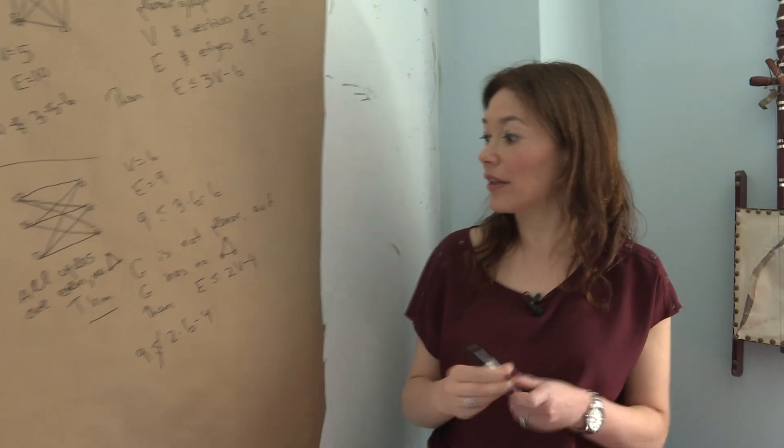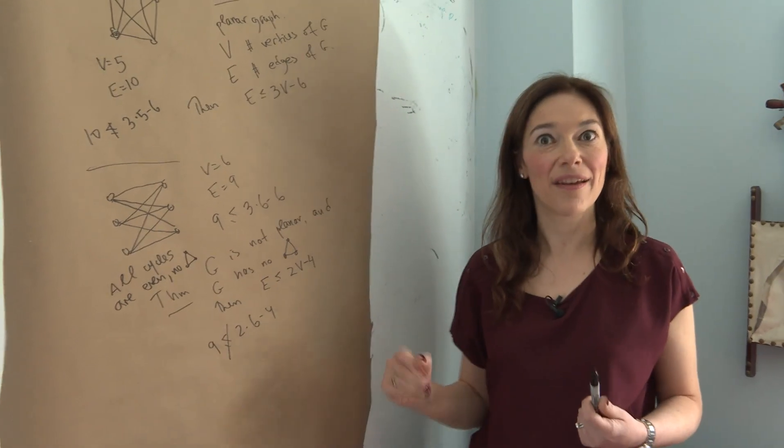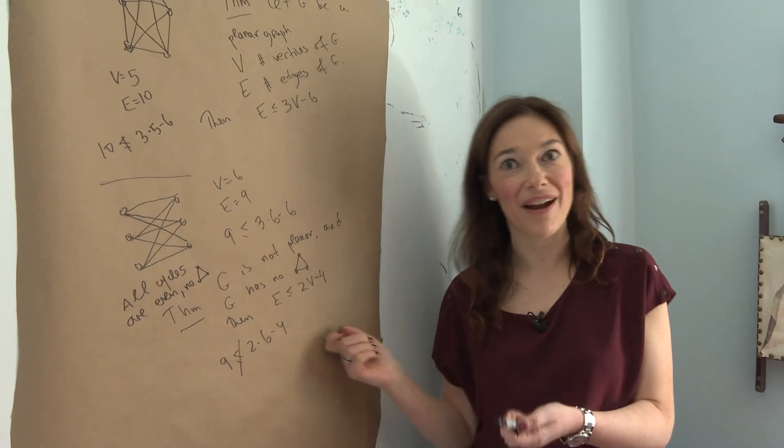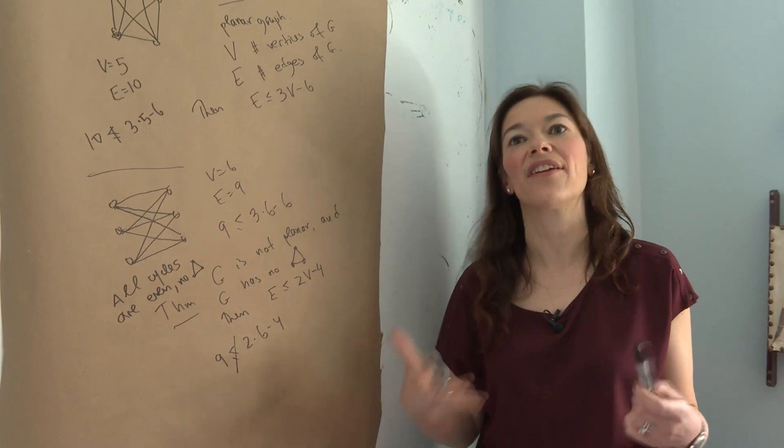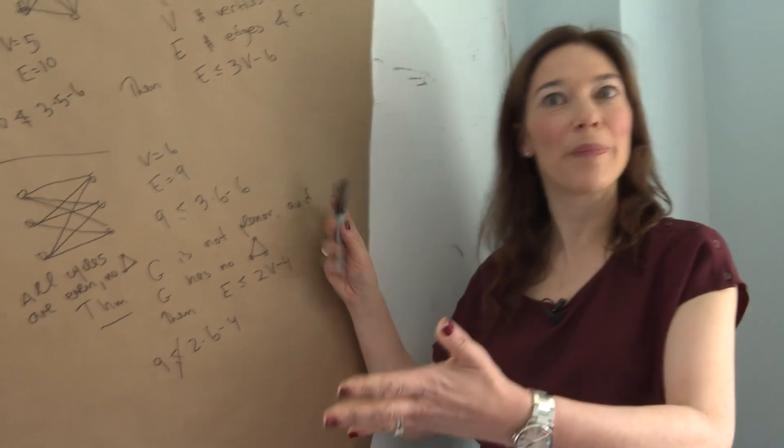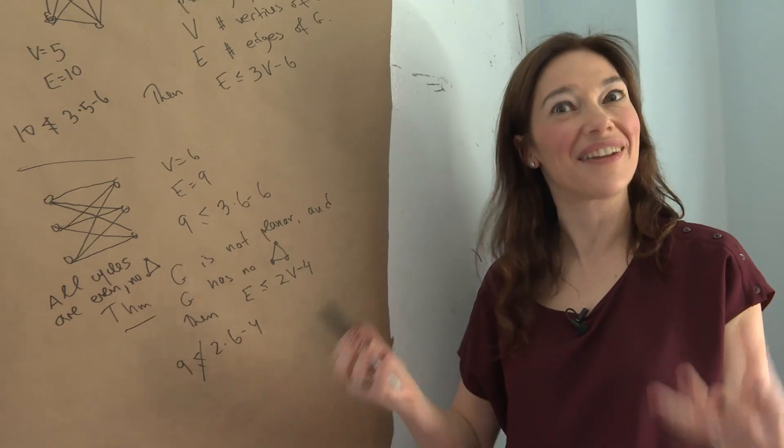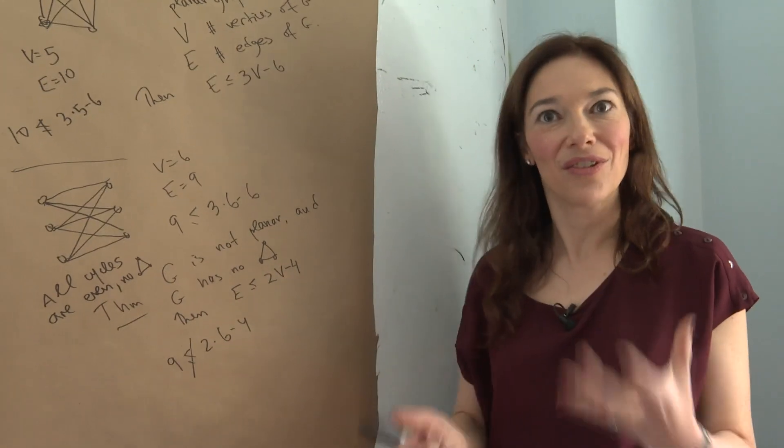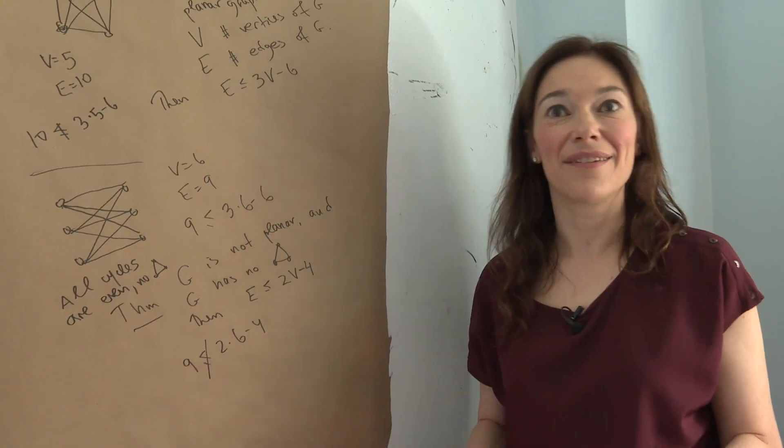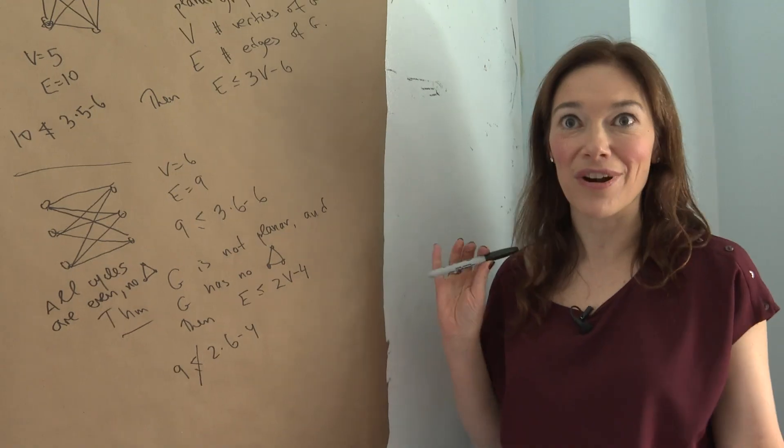So now you might ask, well, you know, this worked very well to test. Maybe it's true the other way if I give you a graph and I promise. I mean, somehow it makes sense, right? If I give you a bunch of vertices, and in order to embed it, you need that there aren't too many edges. If there's too many edges, it's too much of a mess, you can't embed it.